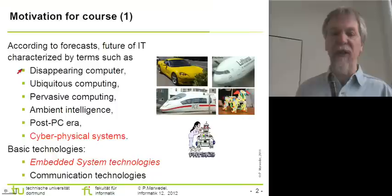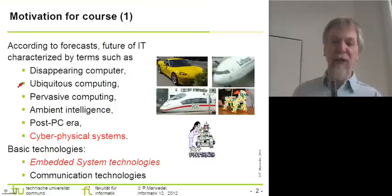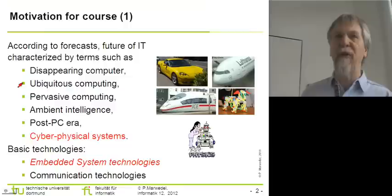For example, people have talked about the disappearing computer. This doesn't mean there will be no computers anymore; it just means these computers will not be visible. Also, people talked about ubiquitous computing, which more precisely should be called ubiquitous information — meaning people expect any information to be available everywhere, wherever they go.